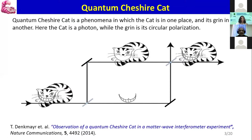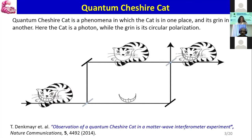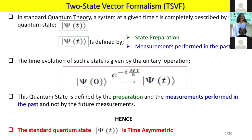In quantum mechanics, the Quantum Cheshire Cat is a phenomenon in which the cat is at one place and its grin is at another place. For example, talking about photons in a Mach-Zehnder interferometer: the photon is traveling in one path while the photon's property — polarization — is following the other path. This is a photonic Cheshire Cat. It looks very strange that the photon is in one path and its polarization in another path.